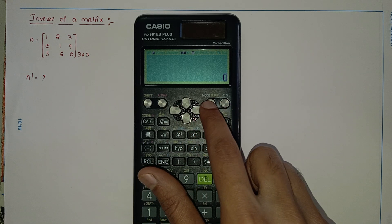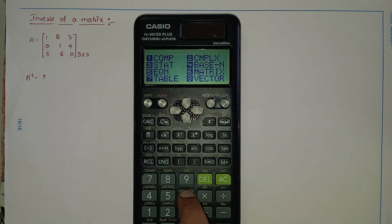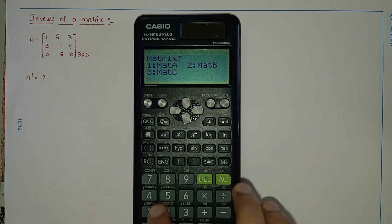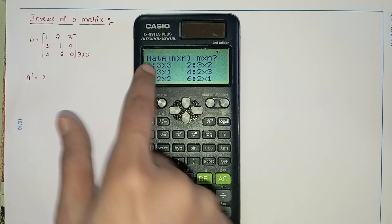So first, click on the mode button, select the matrix option 6. Select mat A. Order of matrix is 3 by 3, so click on 1.